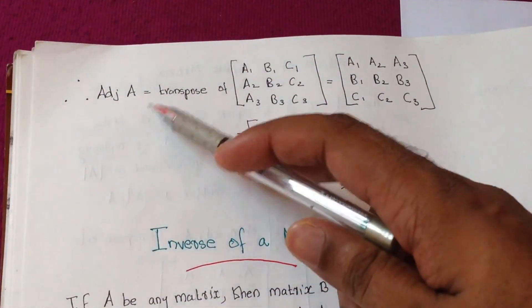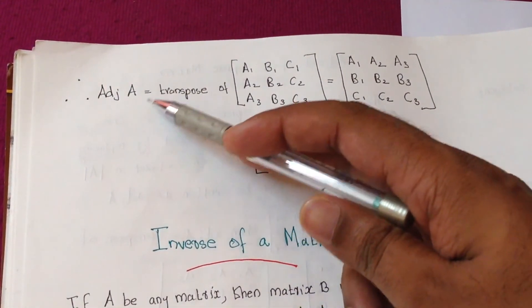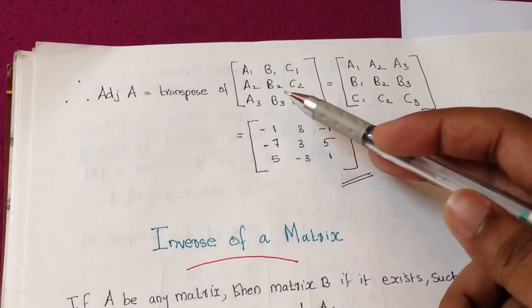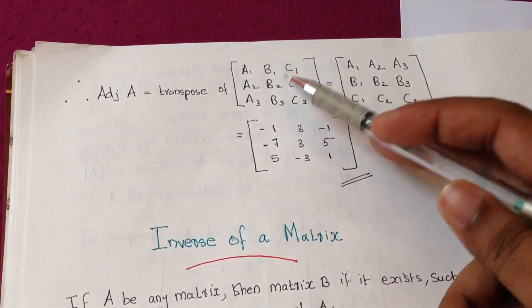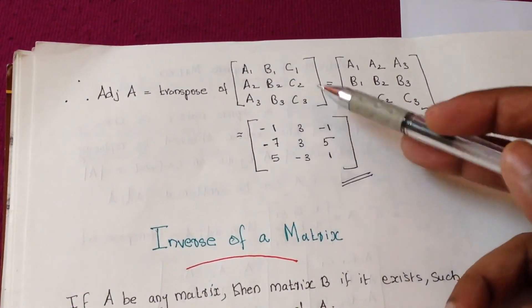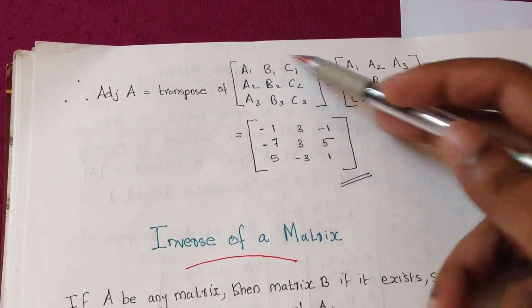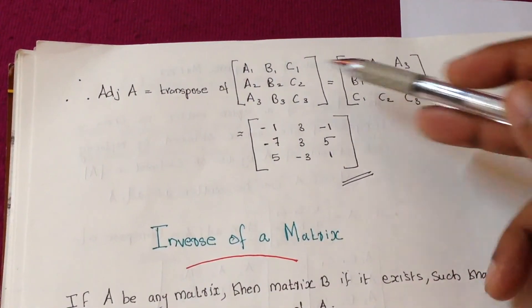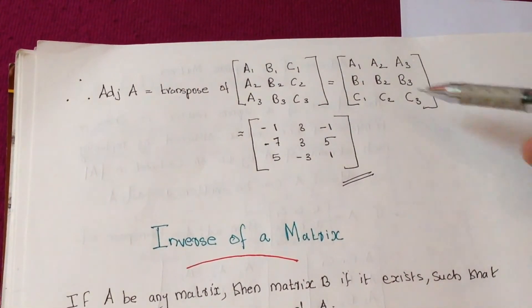Therefore, adjoint of A - as we studied, adjoint A equals transpose of this matrix: capital A1 B1 C1, A2 B2 C2, A3 B3 C3. This row will be converted to this column, and this row to this column.